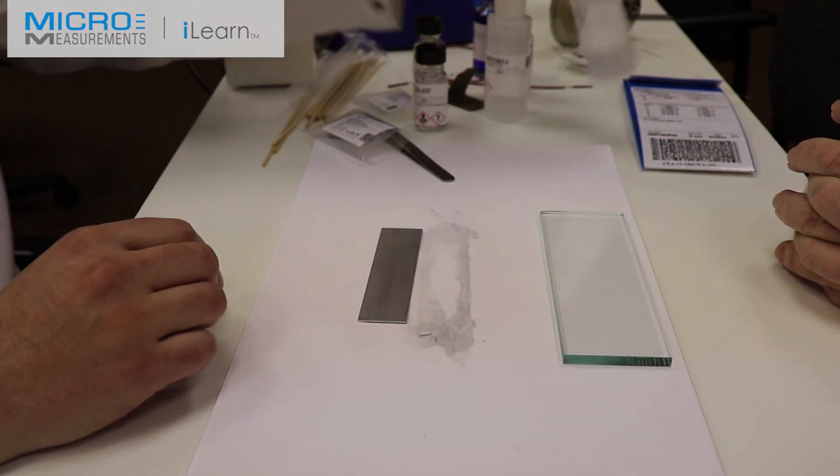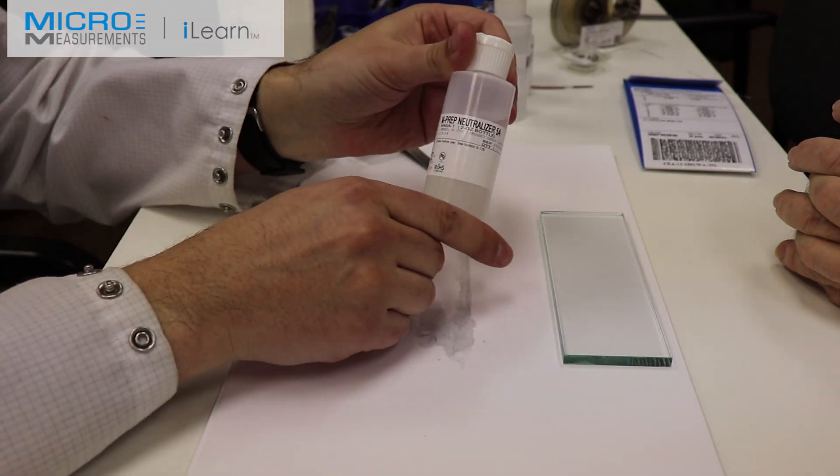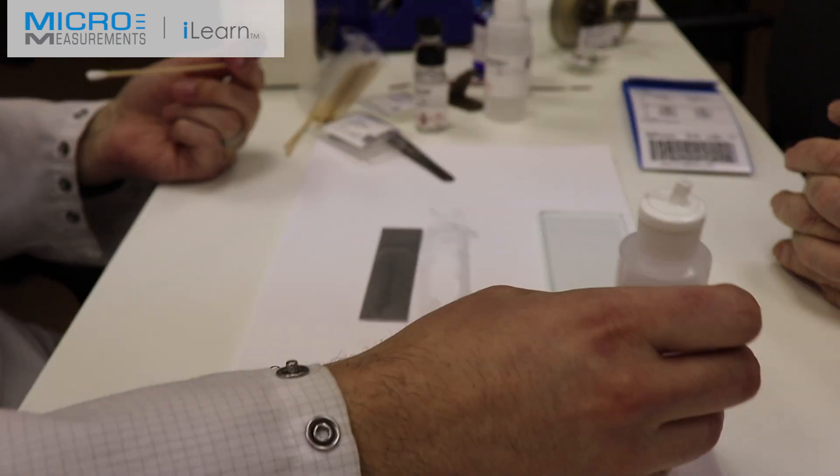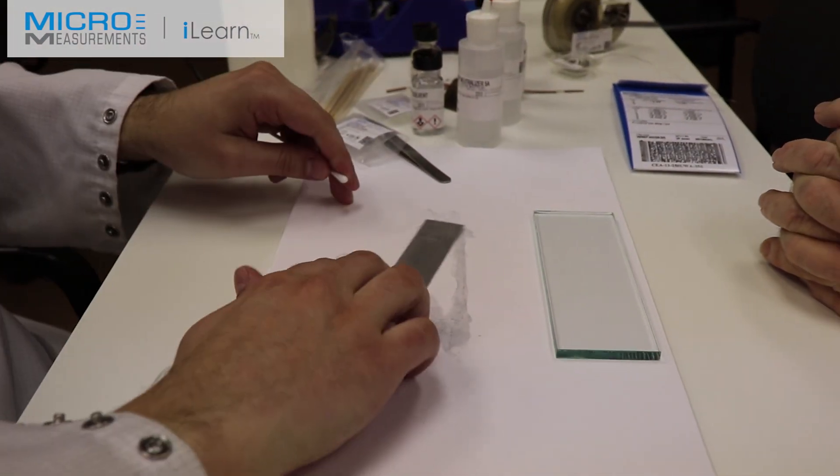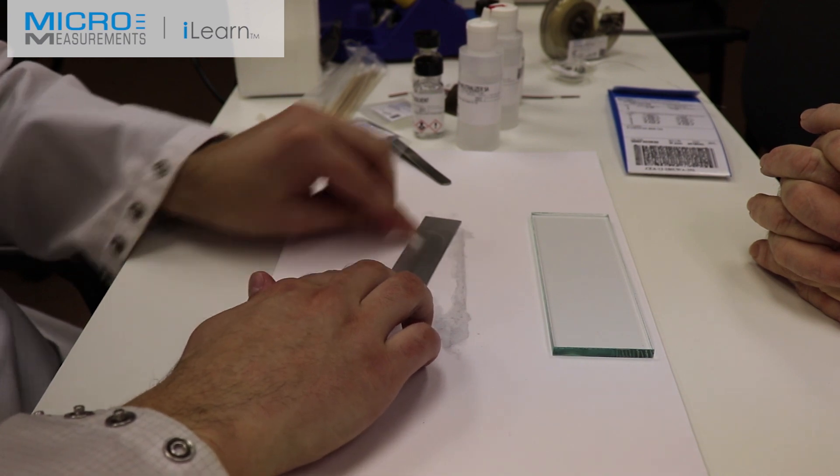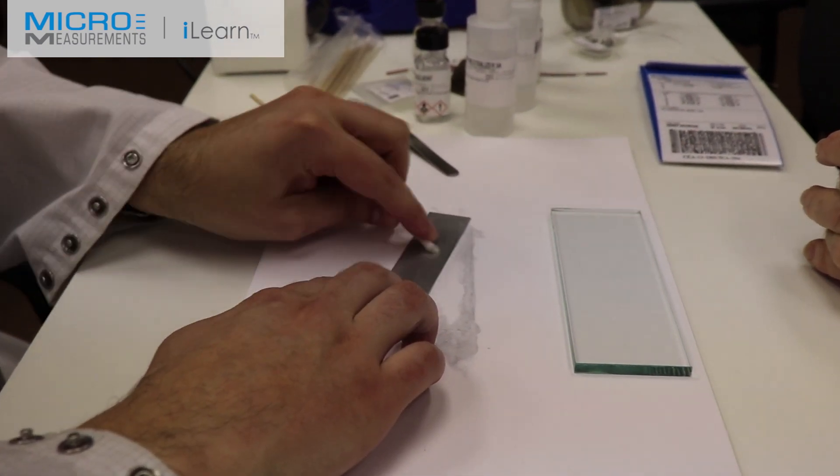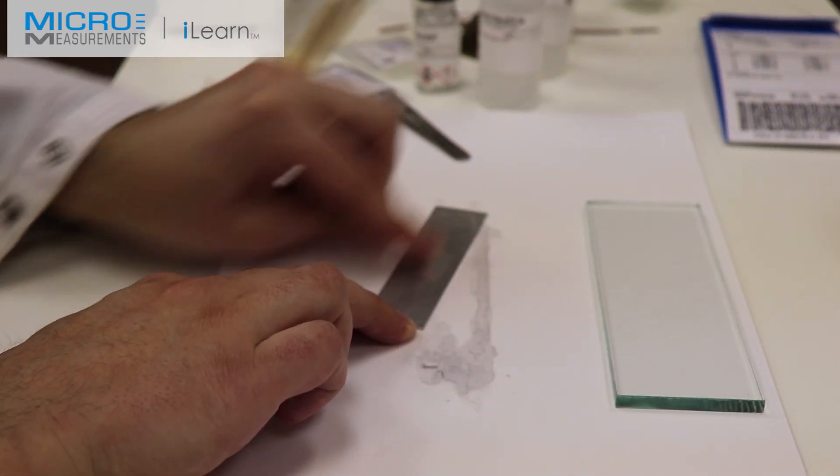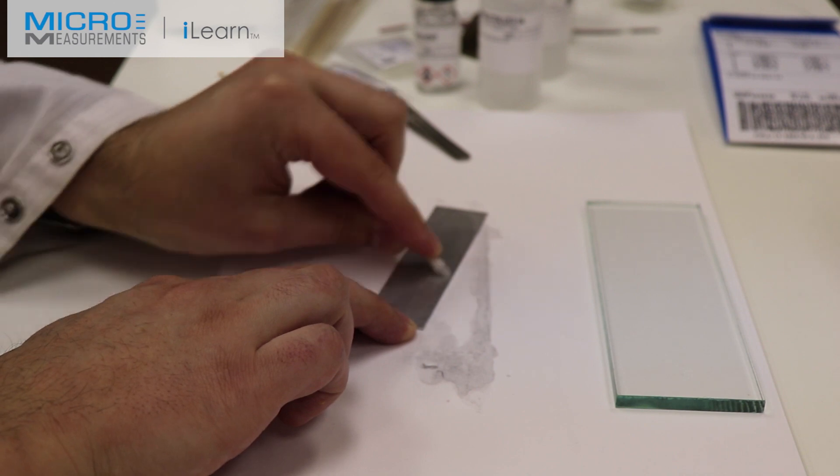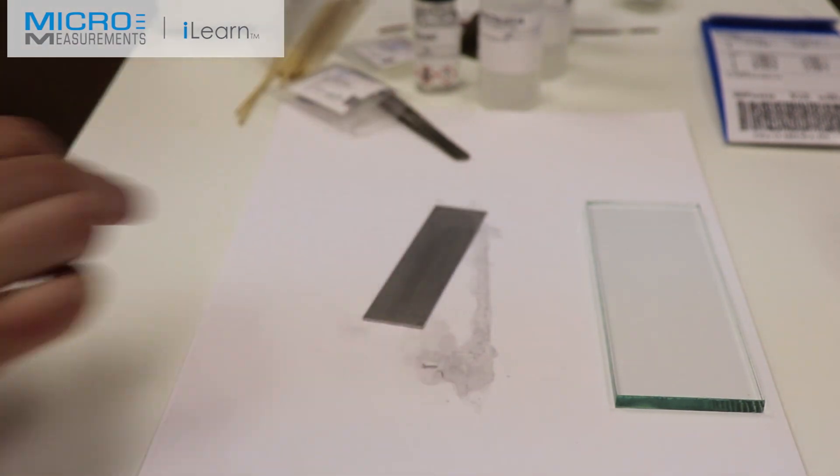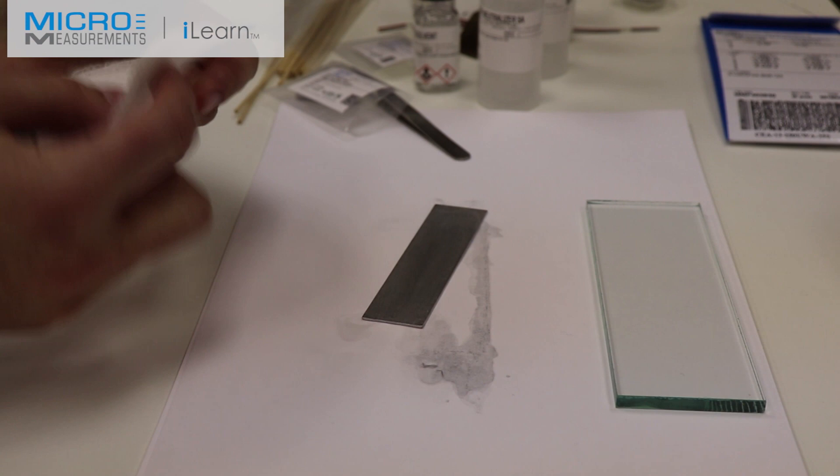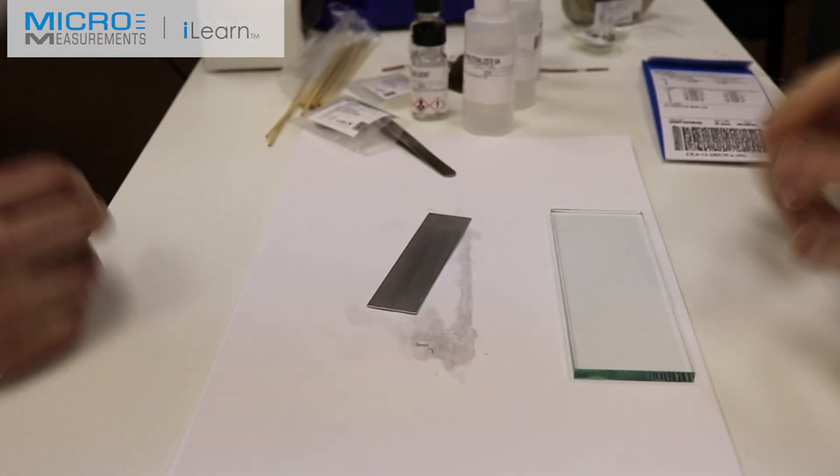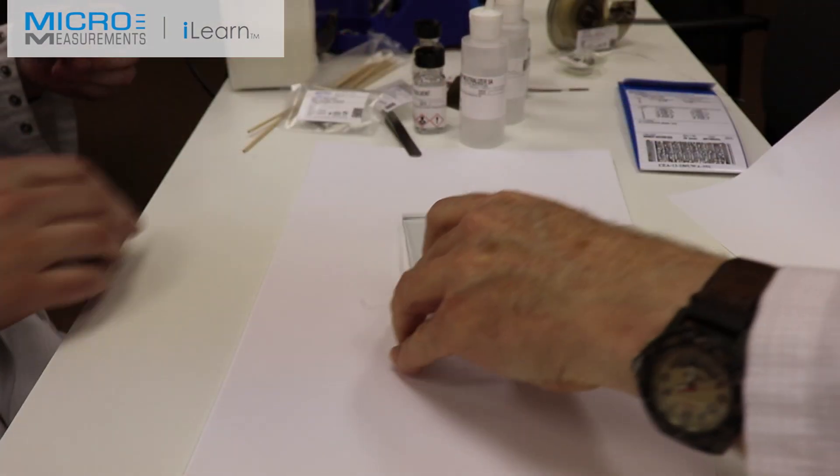Last step of surface preparation is to use the Neutralizer 5A and a cotton tip applicator. We're going to scrub the surface of our beam. This Neutralizer 5A has a little detergent in it, so it's doing a little cleaning, but the major purpose is to get the pH of the surface of the part back to neutral or very basic, which allows the M-Bond 200 to work. M-Bond 200 does not like acidic surfaces. Fold a gauze sponge into quarters, and with a single wiping motion absorb the material.